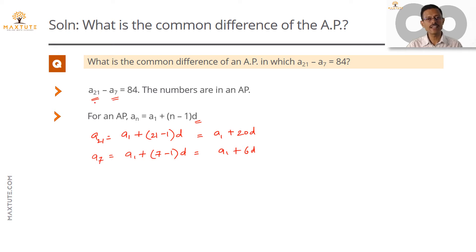We know that the difference between A21 and A7 is equal to 84. So let us compute the difference A21 minus A7. A1 plus 20d minus this term. So A1 and A1 will get cancelled. 20d minus 6d is equal to 14d. A21 minus A7 is 14d, and that we know is equal to 84.